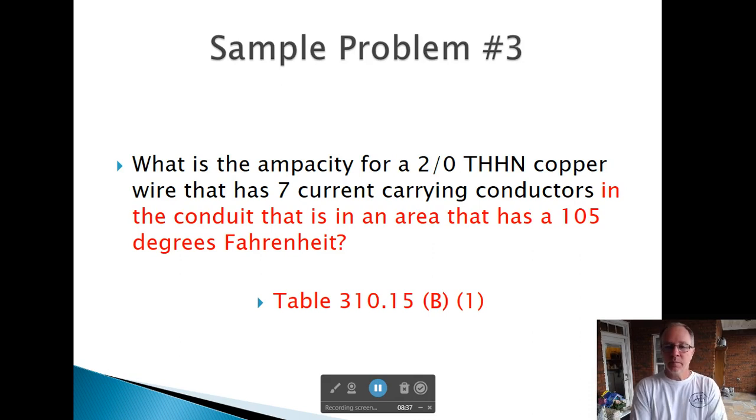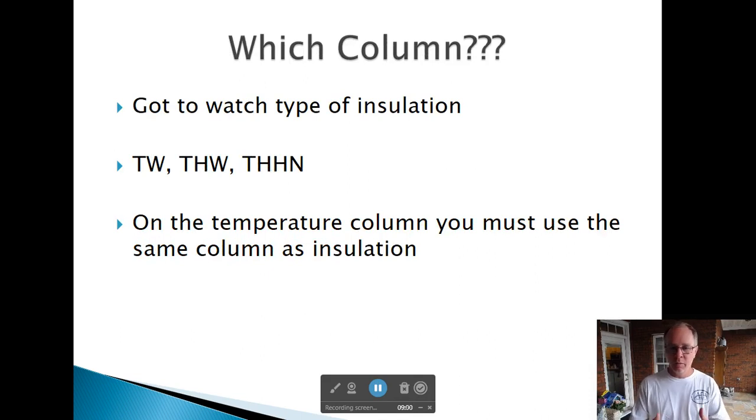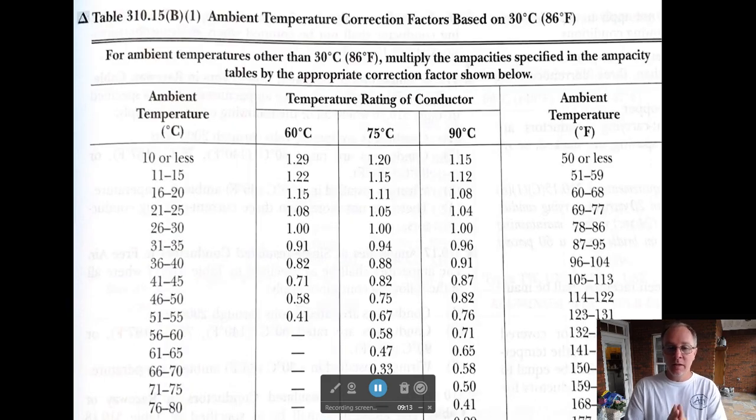Here's sample problem number three. What is the ampacity for the 2-Aught THHN copper wire? It has seven current-carrying conductors in it and it's 105 degrees out there. Well, 105 is above 86, so obviously we're going to go lower than what we had before. Which column do we go in? We need to make sure we do the TW, THW, THHN, or you could say the 60, 75, or 90. But we've got to stay on it.